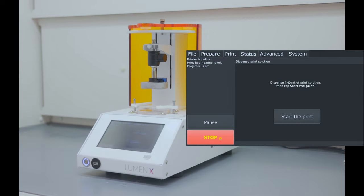Now, we are taken to the status menu. We can see the status of the printer, the print bed, and the projector.